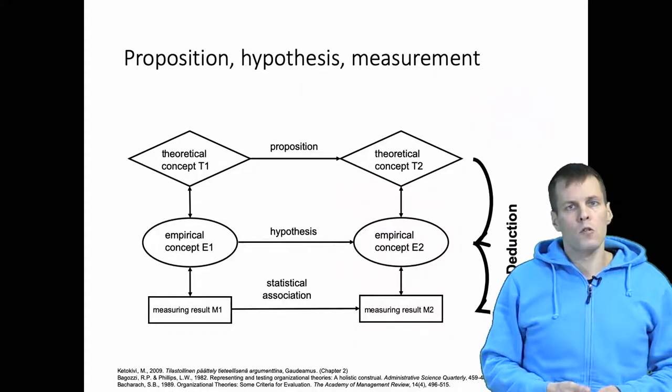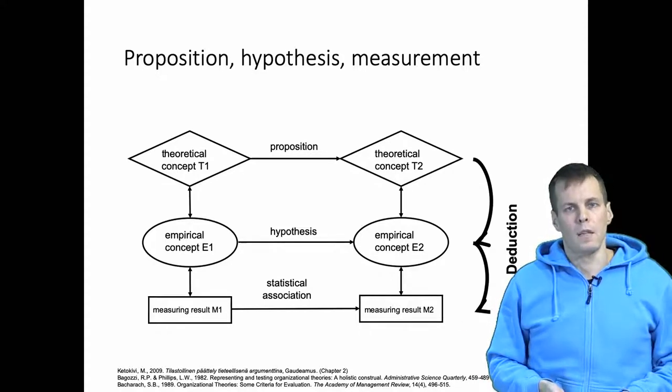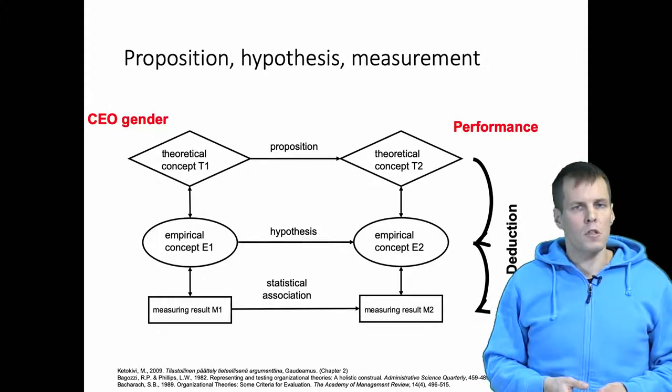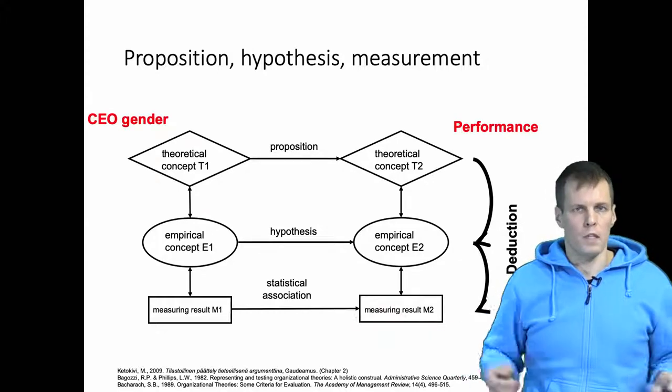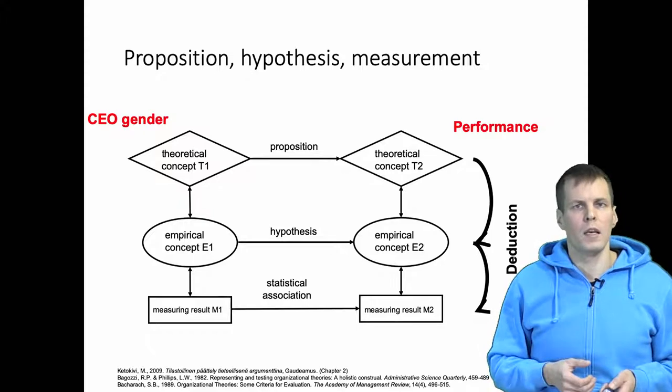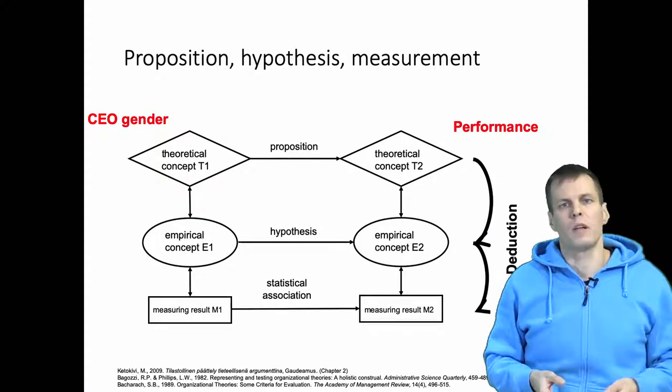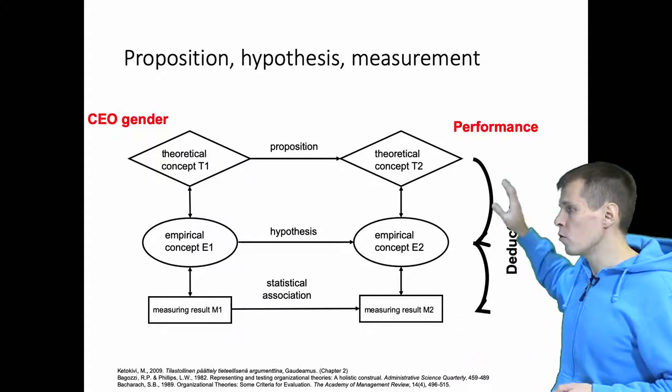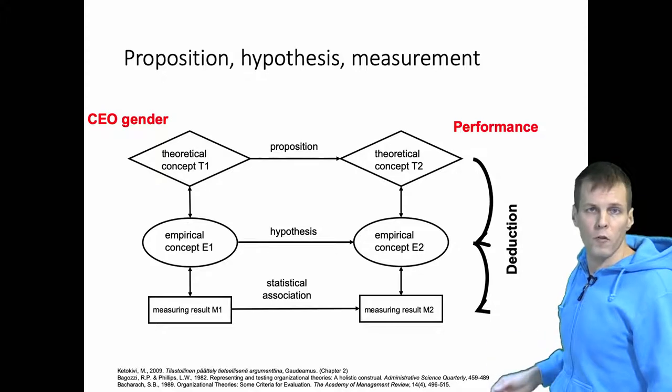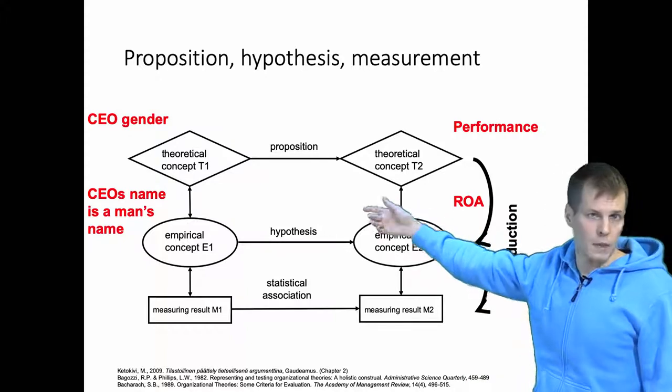Let's take a look at the CEO gender example I mentioned at the beginning of the video. Let's assume we want to make a claim that naming a woman as CEO causes the company's profitability to increase. Our proposition would be that CEO gender influences company performance. That's the level of theory. Then in quantitative research we apply deduction. Performance is abstract, CEO gender is a bit less abstract but it's not something we could easily observe. How do we use our logic to come up with observable things? We could say that performance could be measured with ROA and CEO's gender could be measured by checking whether the CEO's name is a man's name or a woman's name.